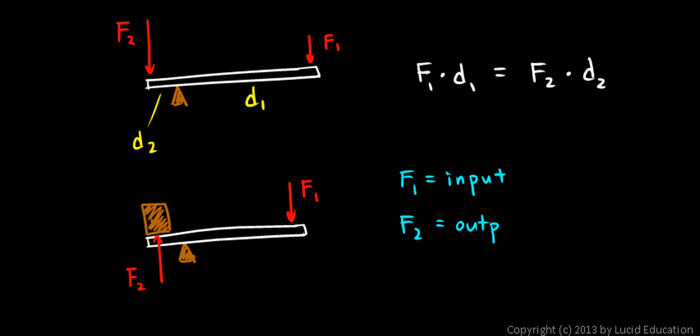It ends up being bigger. In this particular case, the way I've drawn the lever here with a larger distance on the side of f1, f2 ends up being a larger output force. That's obviously useful—you can lift something much heavier than you could otherwise lift.